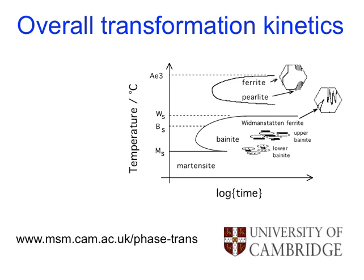Today we are going to talk about overall transformation kinetics — that means taking account of nucleation, growth, and lots of things happening from different locations inside the same material. We've looked at time-temperature transformation diagrams. When designing new steels, it's useful to be able to calculate these diagrams so that you can vary the chemical composition, austenite grain size, etc., on a computer rather than measure them experimentally.